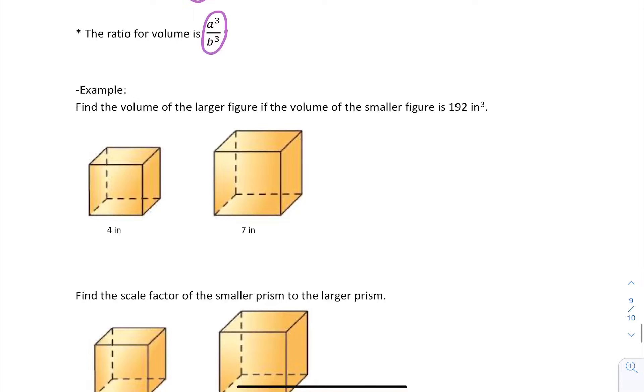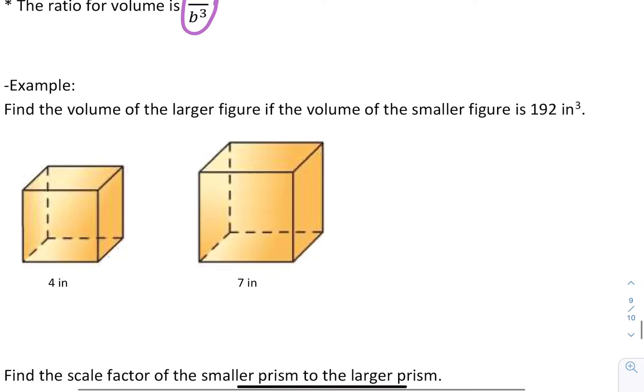In this first example, they give us one side is 4 inches and on the other prism it's 7 inches. Our similarity ratio is 4 over 7, because we just take the ratio of the sides. Our perimeter ratio is also 4 over 7. Now our area ratio is 4 squared over 7 squared, so our area ratio is 16 over 49.